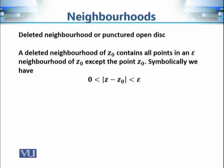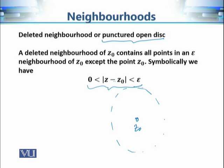Our next definition is the deleted neighborhood, or punctured open disk. It is an open disk from which the center point z₀ is excluded. Mathematically, it is the set of all points z whose distance from z₀ is strictly less than ε and strictly greater than zero. In the open disk, the only point at distance zero from z₀ is z₀ itself, and excluding it gives the punctured disk.